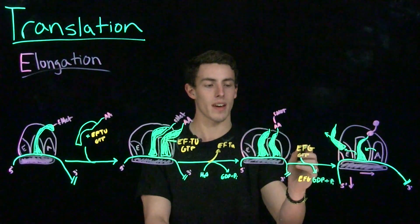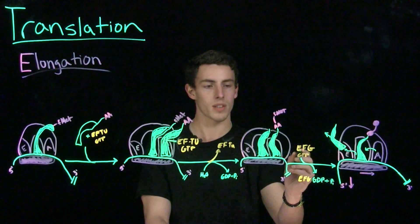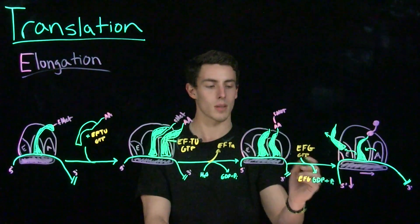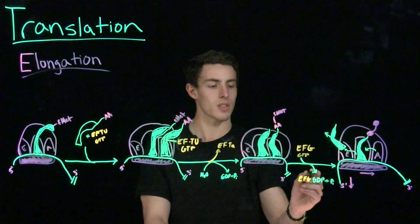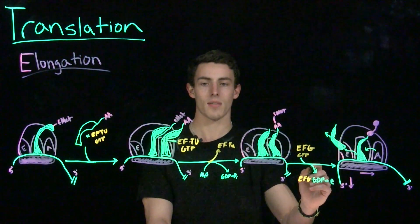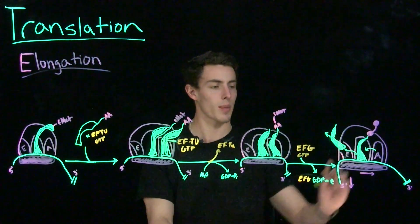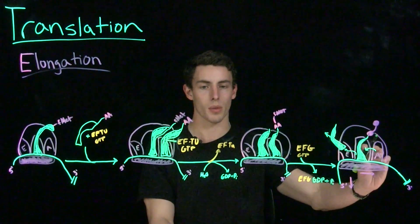So what's going to happen is elongation factor G, or EFG, which is bound to GTP, is going to briefly associate and then the GTP is going to be hydrolyzed. Hydrolysis of this GTP is going to cause EFG to leave, but it's also going to cause the 70S ribosome to translocate. During translocation, the 70S ribosome will slide one codon to the 3' direction.